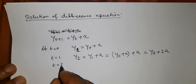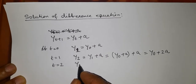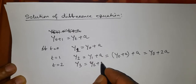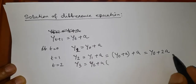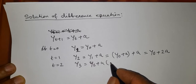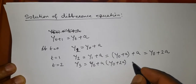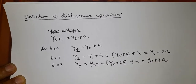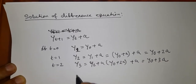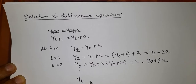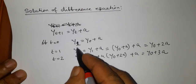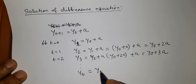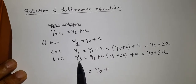Similarly, if t = 2, then y_3 = y_2 + a = y_0 + 2a + a = y_0 + 3a. In general, writing y_t instead of 1, 2, 3, we get y_t = y_0 + t·a.